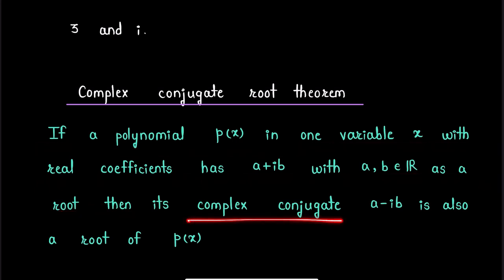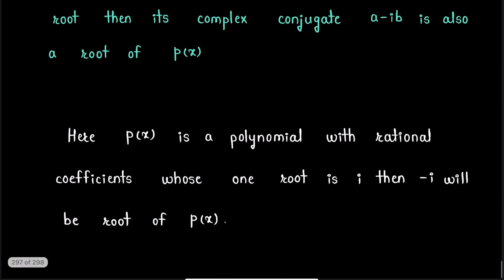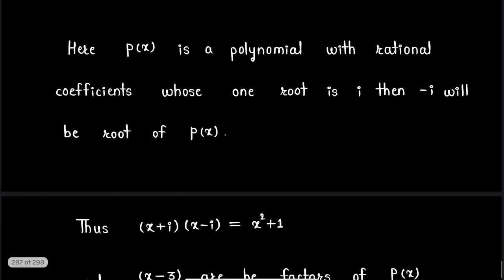That is, for every real polynomial P(x), its roots will always occur in complex conjugate pairs. Now here, P(x) is a polynomial with rational coefficients, so P(x) is a polynomial with real coefficients whose one root is iota.